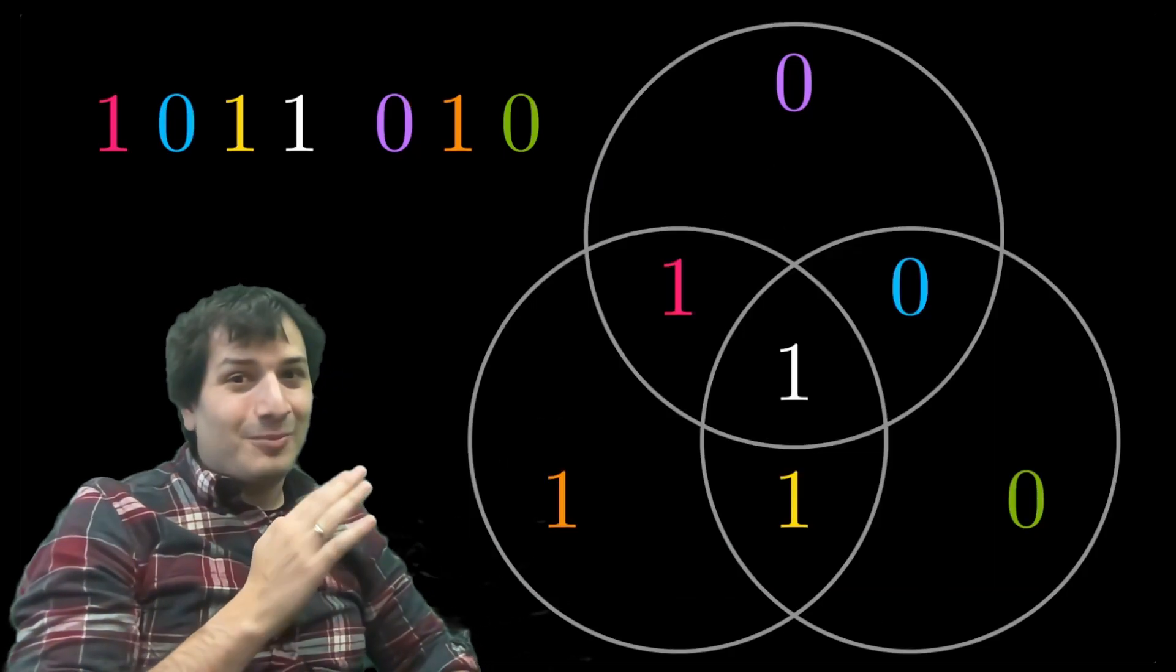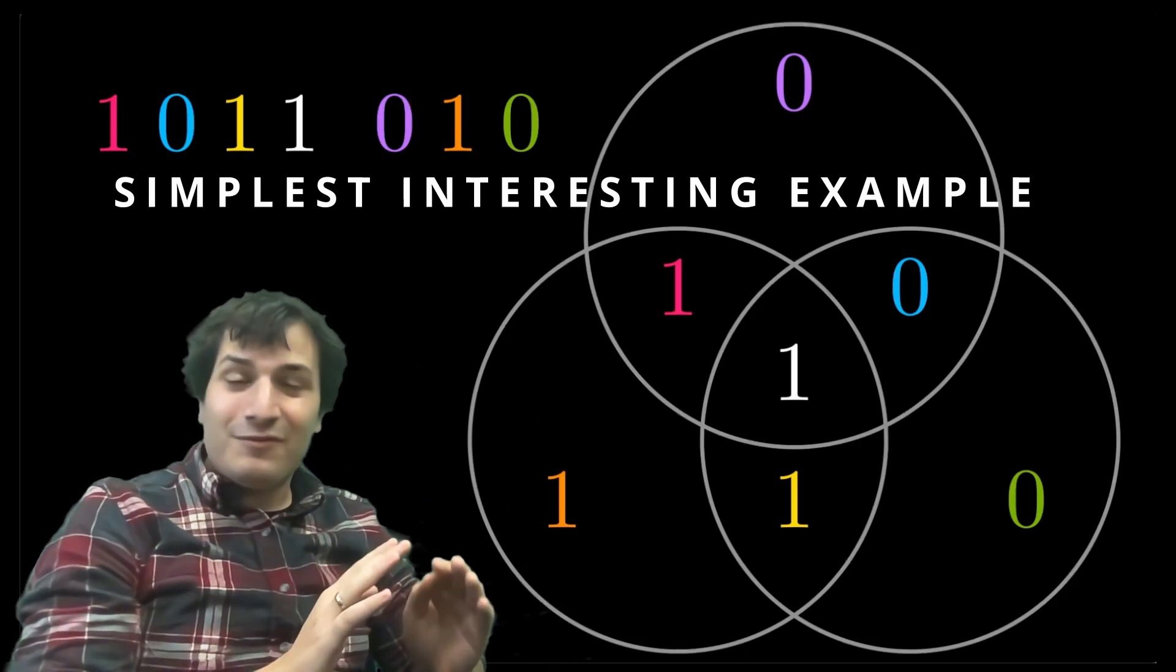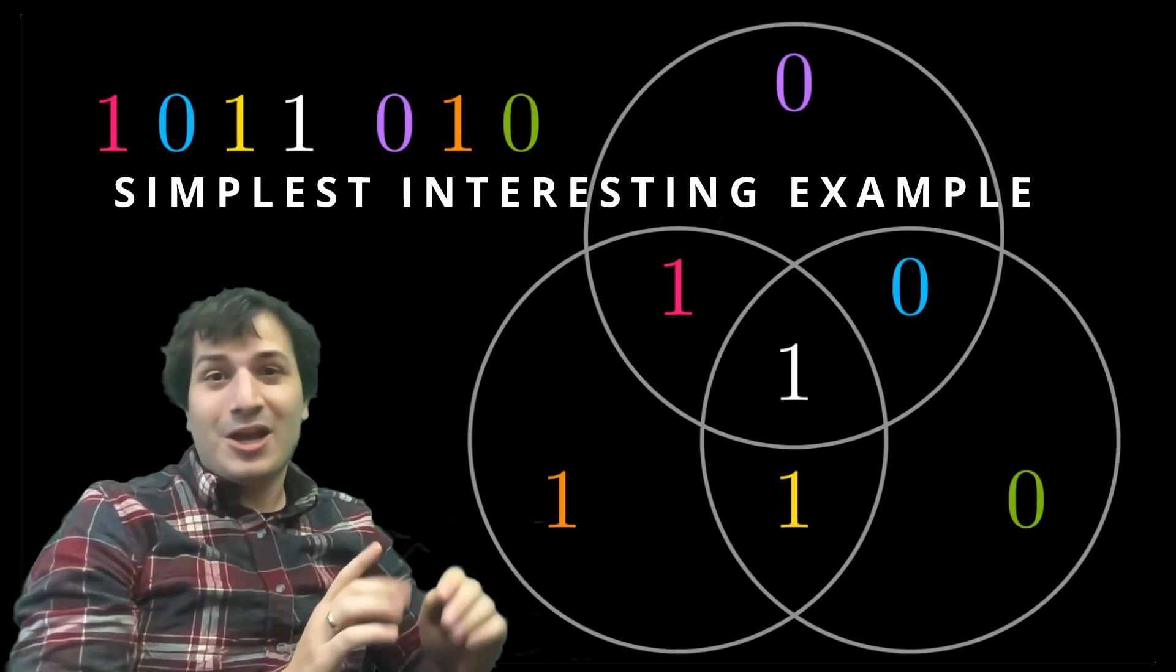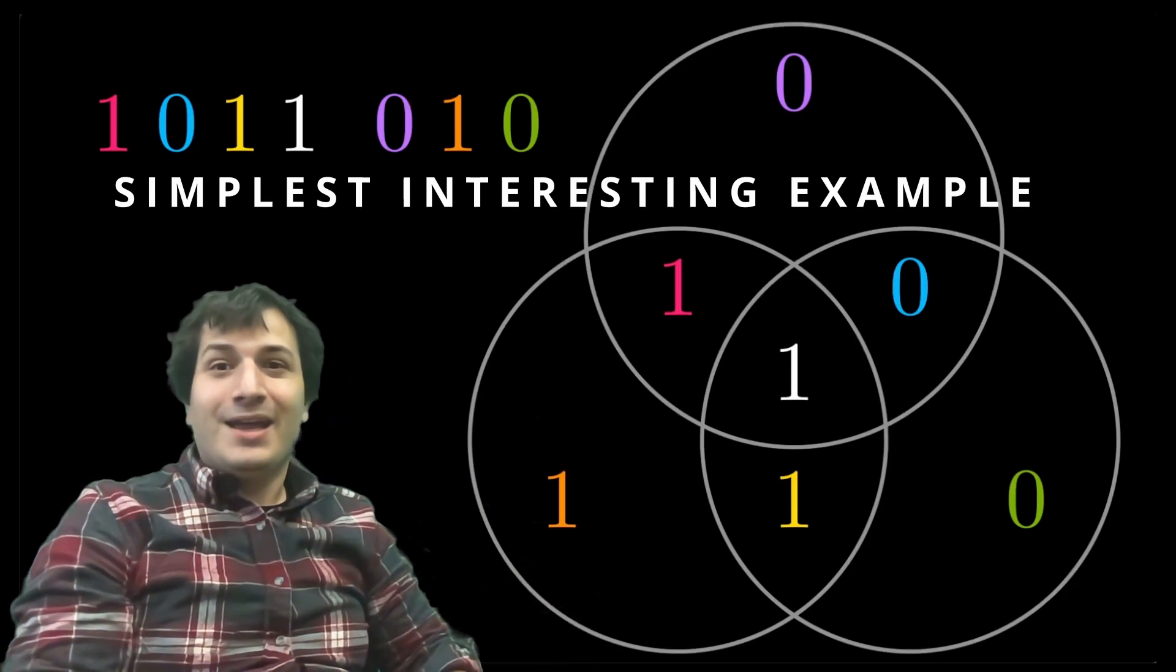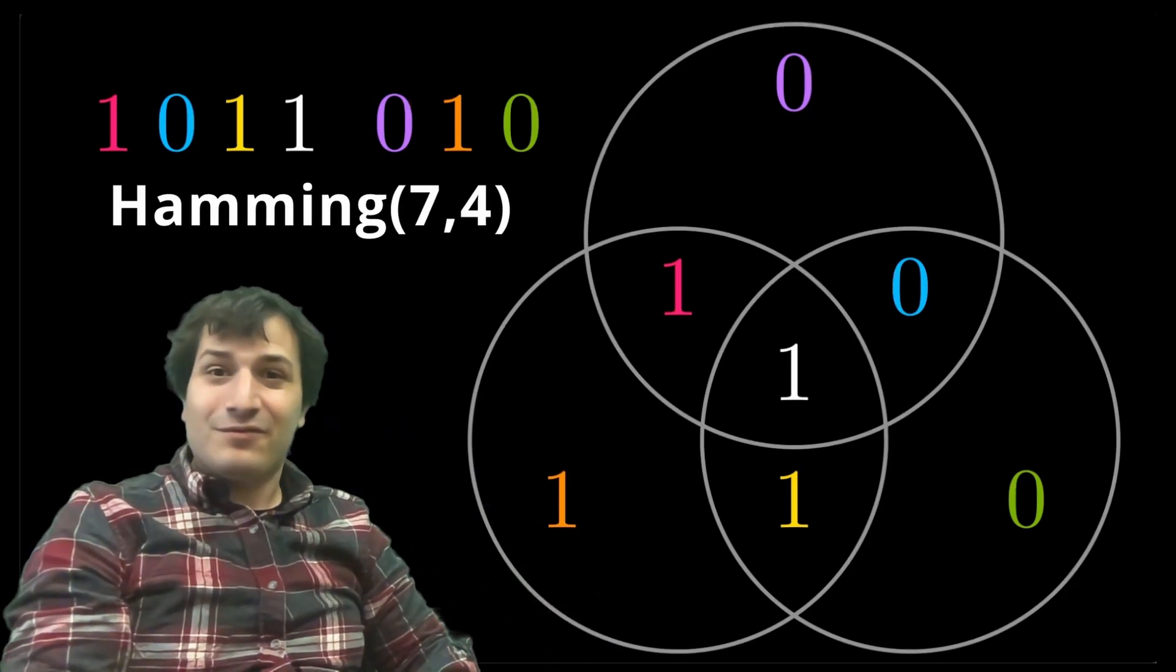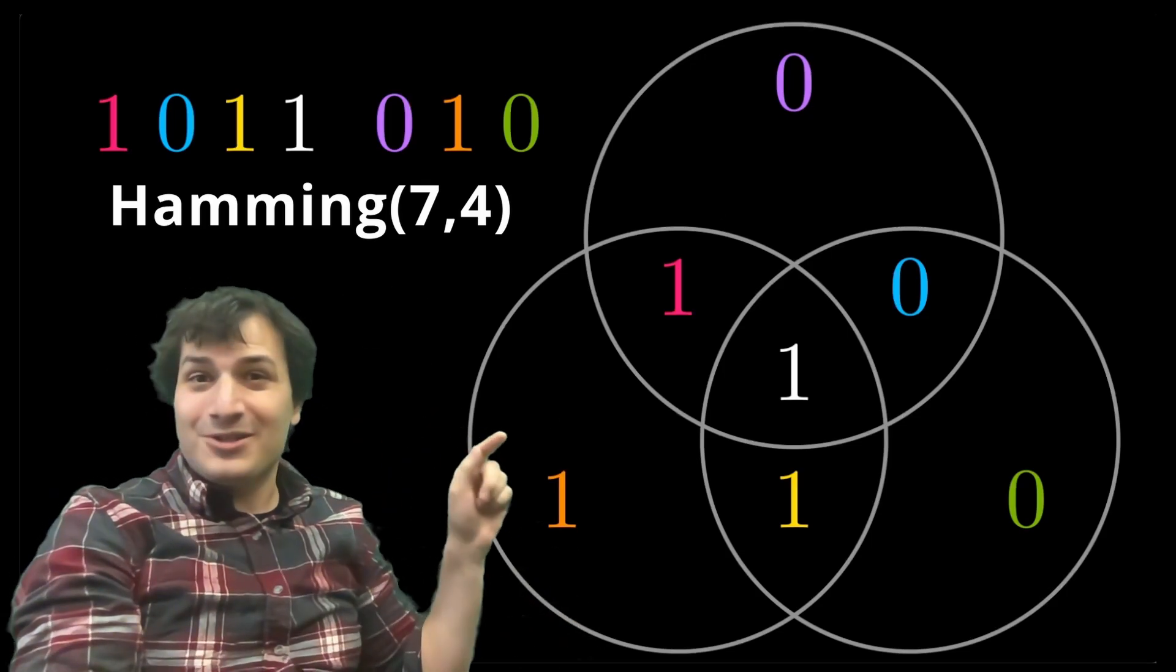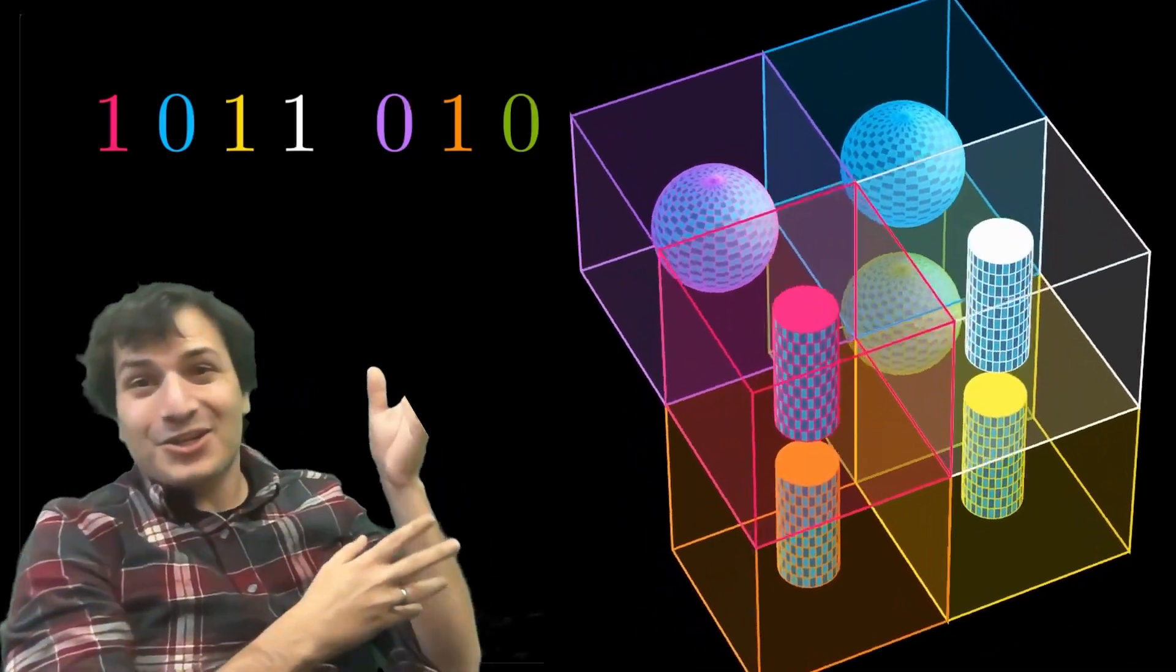My philosophy when learning math is to start with the simplest interesting example. That's an example that's simple enough that you can fully understand it from start to finish, but is interesting enough that it gives you a sense of the math going on. For error correcting codes, this is my favorite example. It's called the Hamming 7-4 code and it has this beautiful triangle of numbers arranged into three circles and that's how it works. And you can understand it in 3D as a cube of numbers.